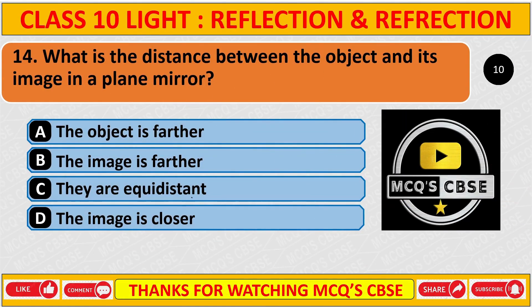What is the distance between the object and its image in a plane mirror? The correct answer is C: they are equidistant.